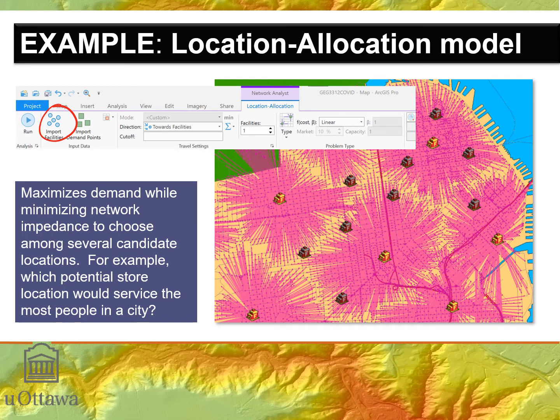Location allocation modeling is done when we have a number of competing locations in space. For example, as a retailer you might want to open a new retail outlet. You can have a number of potential locations and you want to figure out which of those locations would provide the greatest return on investment through serving the most customers. You would use a location allocation model to figure out which potential locations would win in a competition to service the most customers.